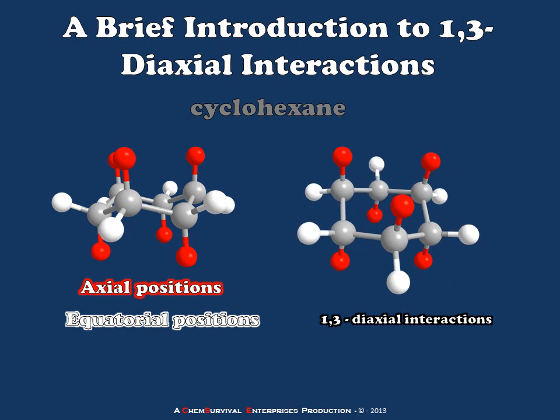In this orientation, I can show you a little bit better what's going on in these 1,3-diaxial interactions. Notice that there's a set of axial atoms at the top of the molecule which are close to one another, and that they're on alternating atoms — this is the origin of the '1,3' part of this name. We call it 1,3-diaxial because if we were to label the atoms, we would label them 1 and 3. There's a similar set of proximities on the other side of the molecule, so in total we have six potential 1,3-diaxial interactions for any particular chair conformation.